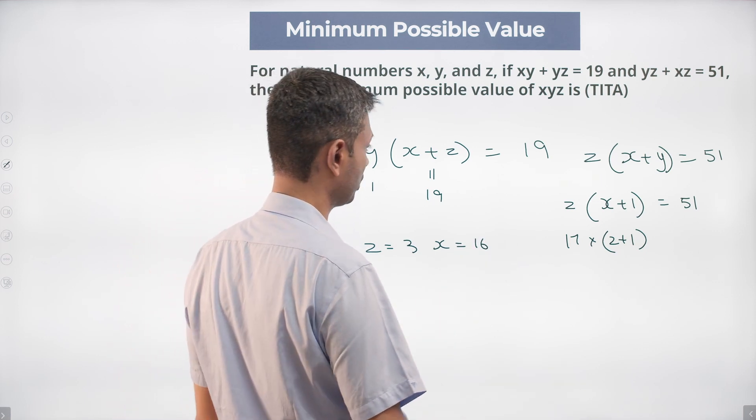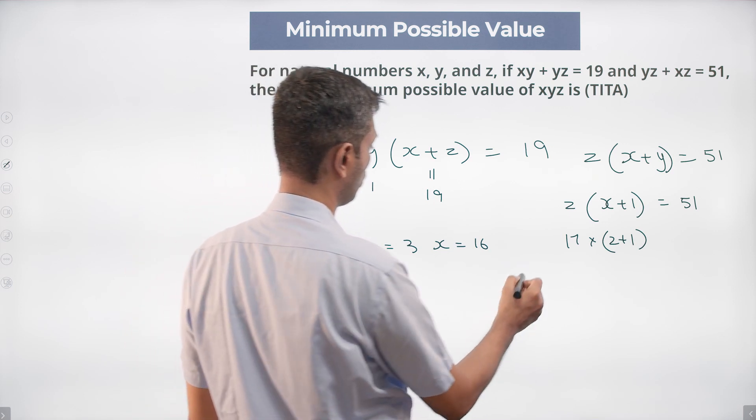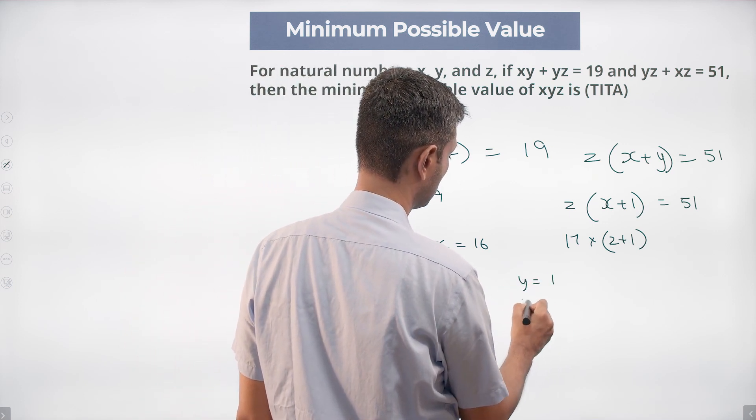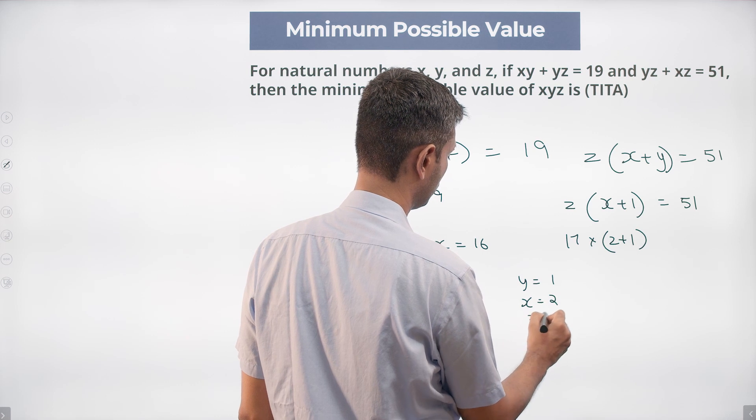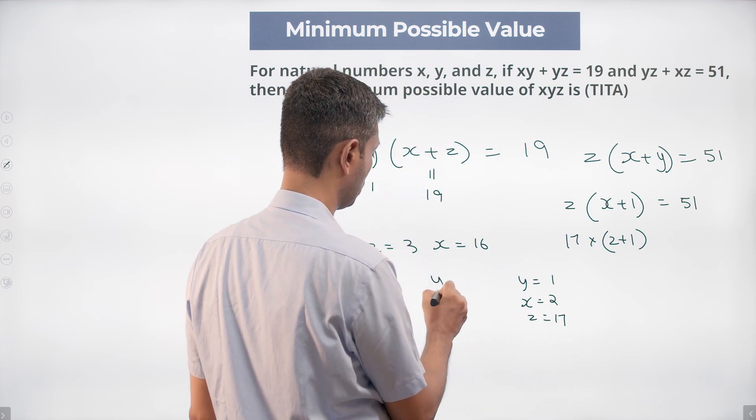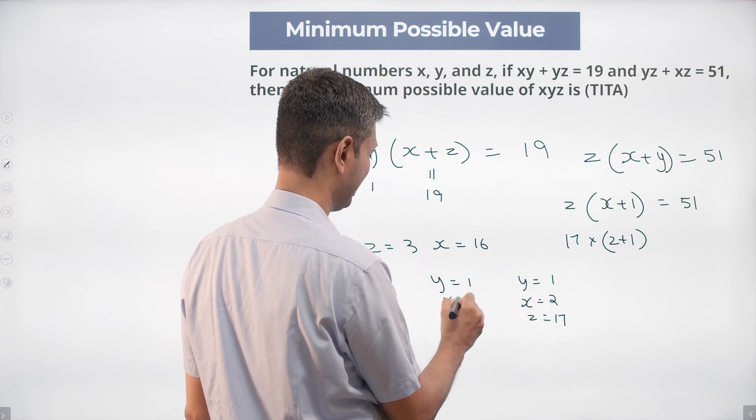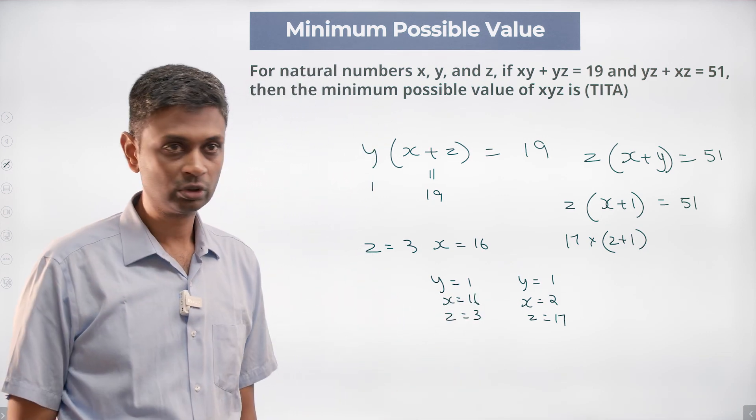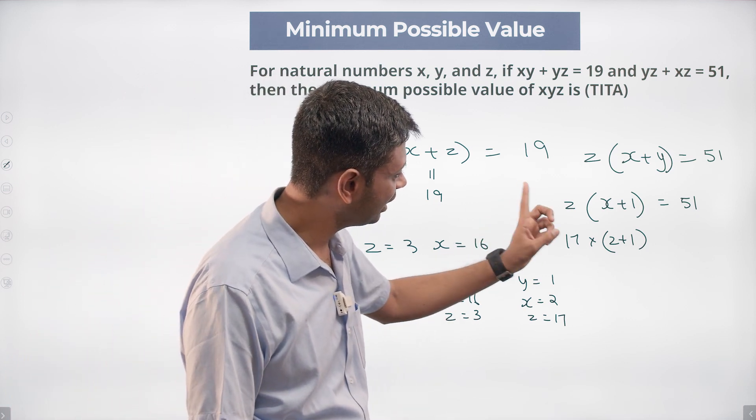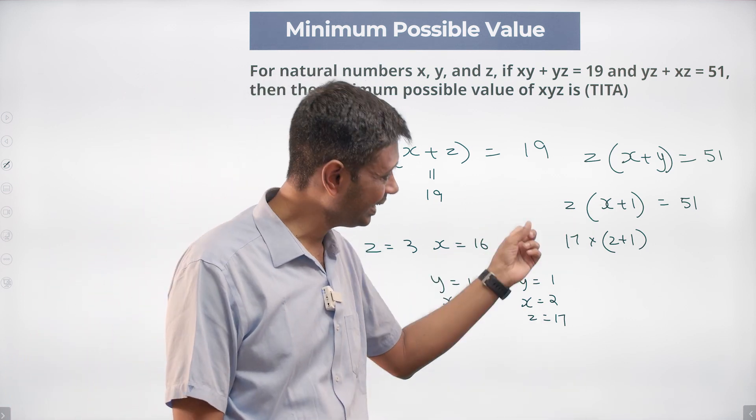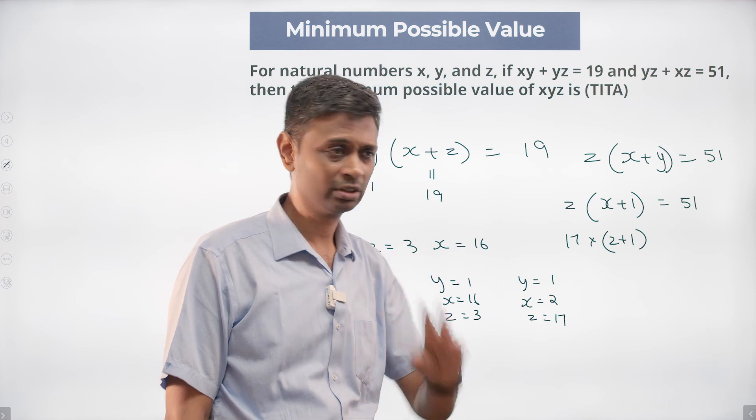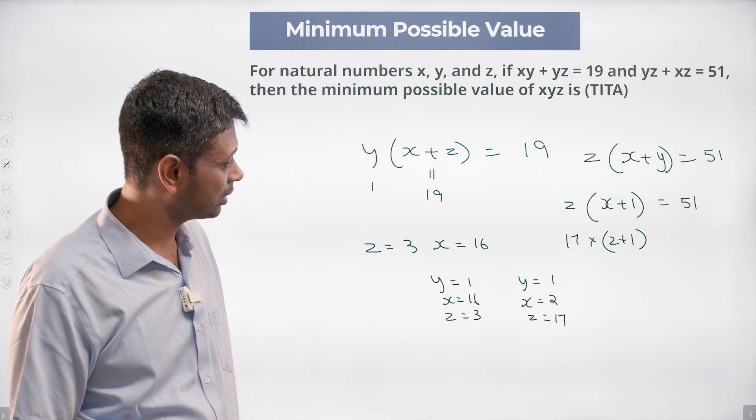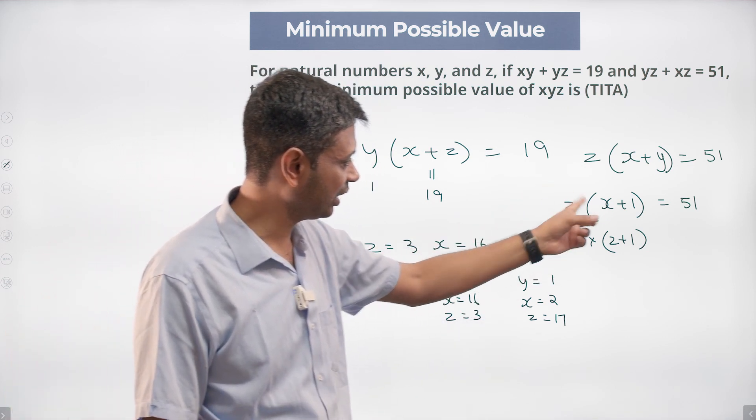So we could have a scenario where y is 1, x is 2, z is 17, or y is 1, x is 16, z is 3. So this is 17 into 3 or 3 into 17, both ways it works. So it could be z is 17, x is 2, or x is 16, z is 3.